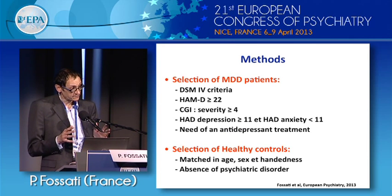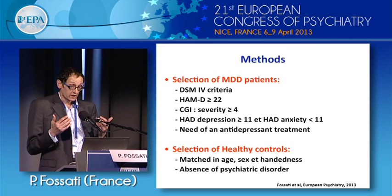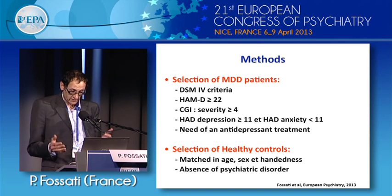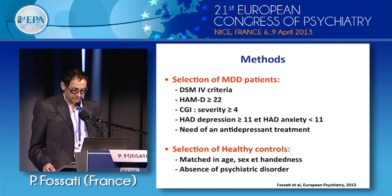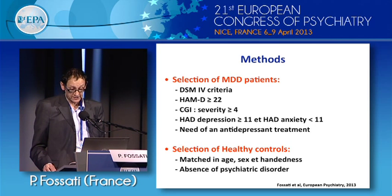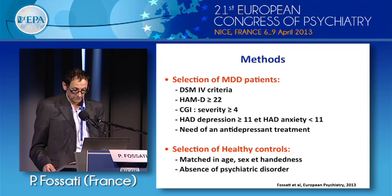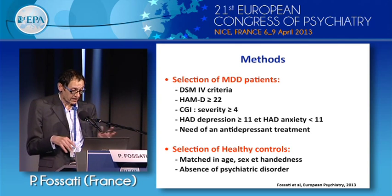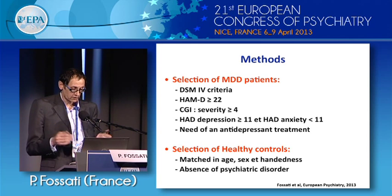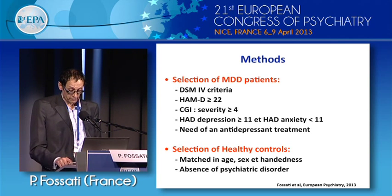The depressed patients included in this study were outpatients with a Hamilton score of at least 22, and a CGI severity score greater than four. We tried to avoid including patients with a high level of anxiety, and all patients needed antidepressant treatment. Subjects were matched for age, sex, and other factors, and there was no psychiatric disorder in the healthy controls.